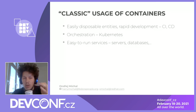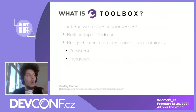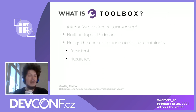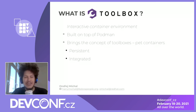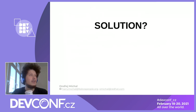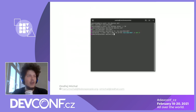But this is not the only way to use containers. Yes, they are disposable and non-interactive, but can we shift that? Yes, we can — and that is the reason why Toolbox exists. It's an interactive container environment. It is built on top of Podman and brings the concept of toolboxes, which are pet containers. These have two attributes: they are persistent and they are integrated.